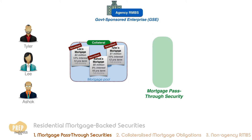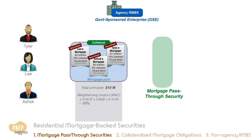The securitized mortgages in the pool can be aggregated to provide meaningful statistics for potential investors. The total principal of all the loans when added up is $10 million. The weighted average coupon of the pool is the weighted average of the interest rates of all the mortgages in the pool. The weight is each mortgage's outstanding principal balance as a proportion of the total outstanding principal of all the mortgages in the pool. If we plug in the figures, we calculate a 10% rate.